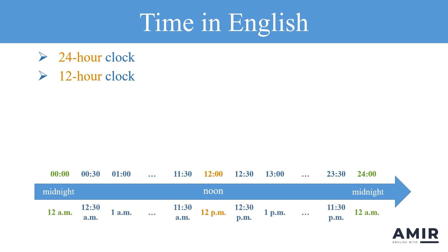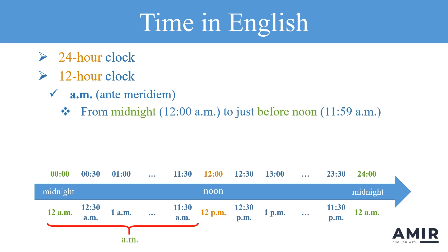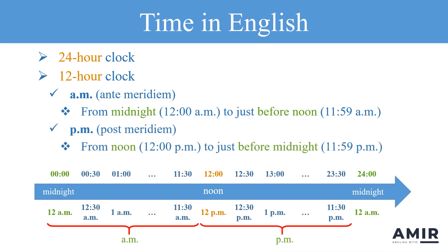In the 12-hour clock, we have two periods: a.m. and p.m. A.m. stands for ante meridiem, which is Latin for 'before midday.' It covers the time from midnight, 12 a.m., to just before noon, 11:59 a.m. P.m. stands for post meridiem, meaning 'after midday.' It runs from noon, 12 p.m., to just before midnight, 11:59 p.m. Because people often confuse 12 p.m. and 12 a.m., it's more common to use the terms noon for 12 p.m. and midnight for 12 a.m.